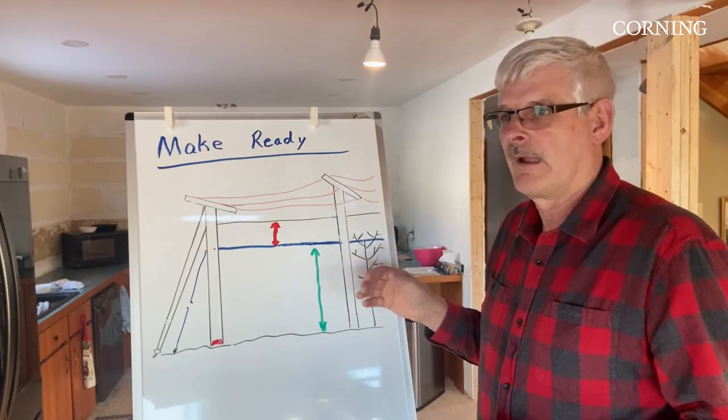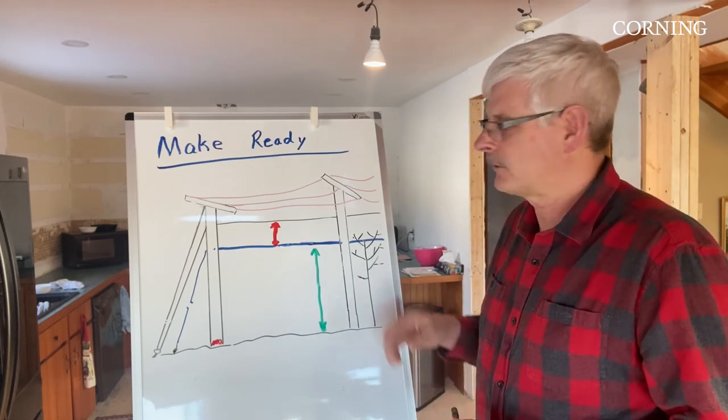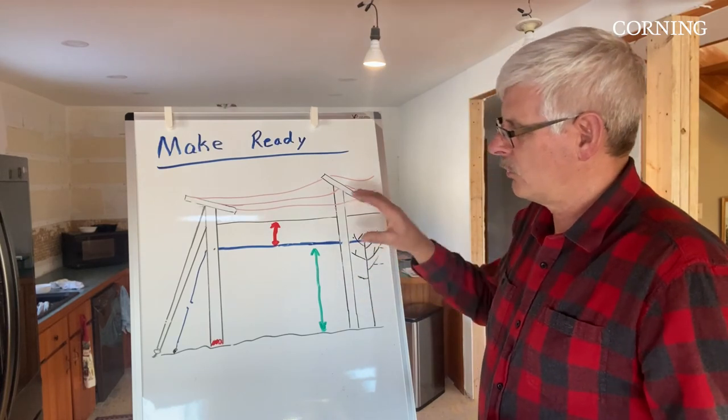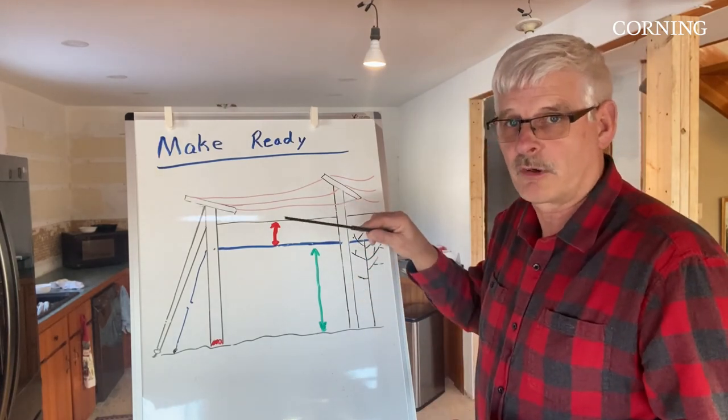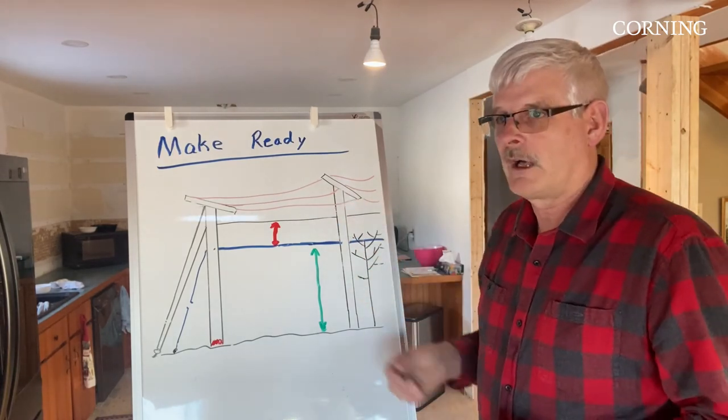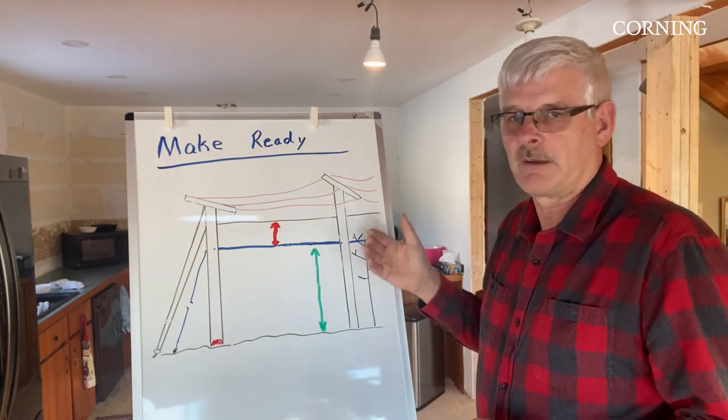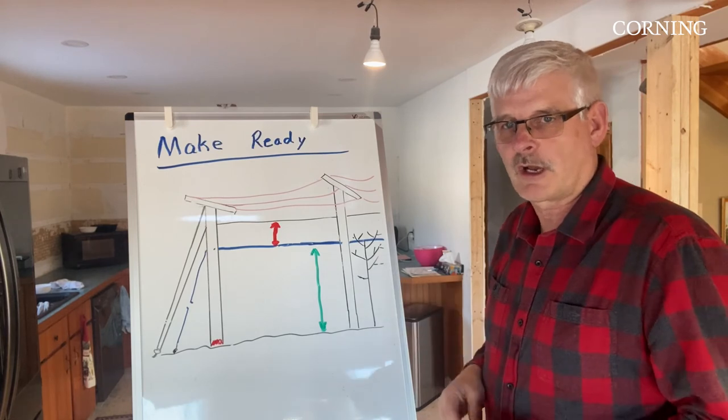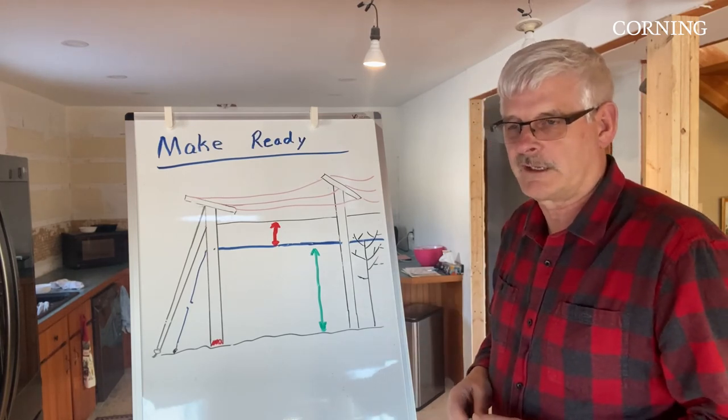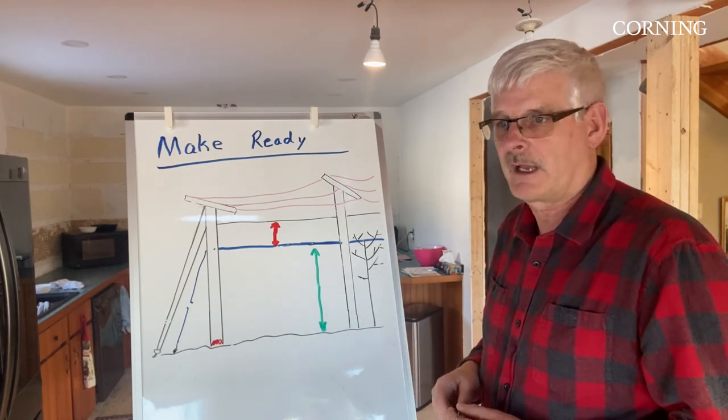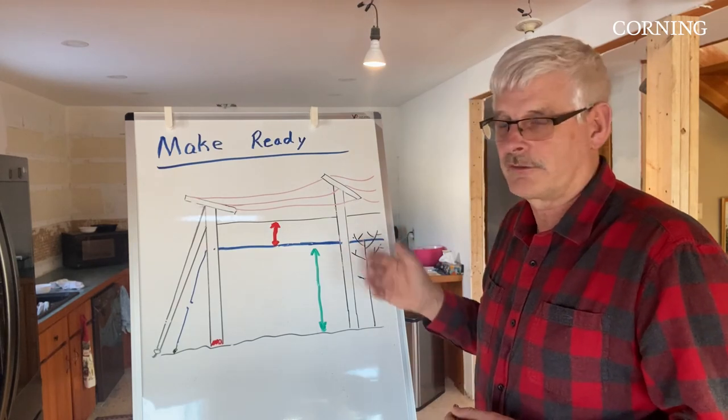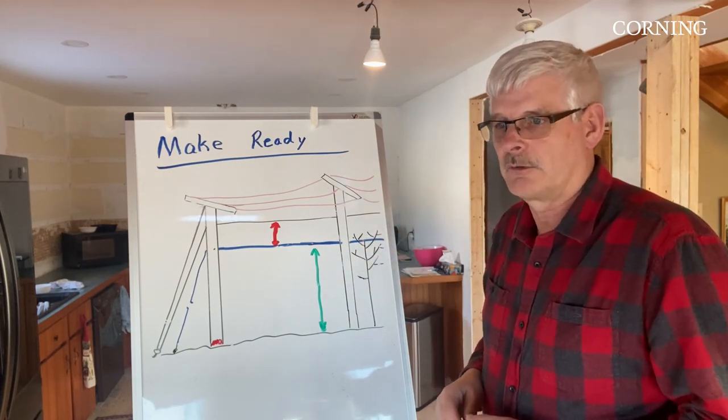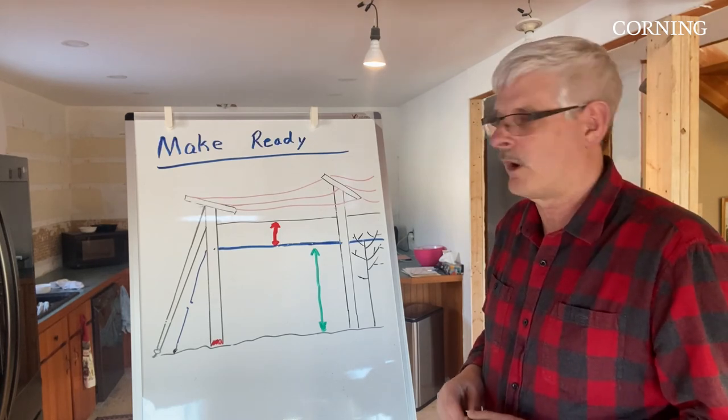The key thing is, when you're working with the pole owners, clearly understand what their requirements are to assess the pole line. Fully understand the timeline of how long it will take for them to do their work, so you can plan your project accordingly in terms of bringing fiber broadband to your community. And truly understand what the costs are in terms of what you have to pay versus what they are going to pay.